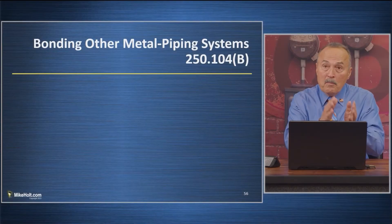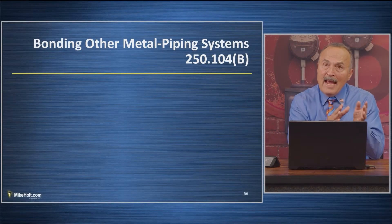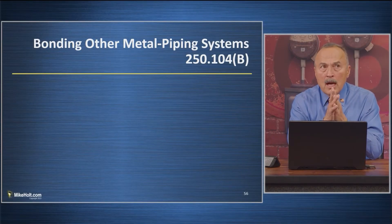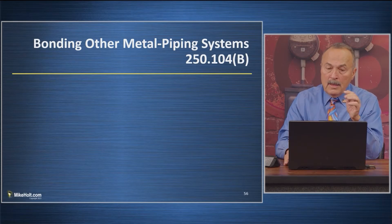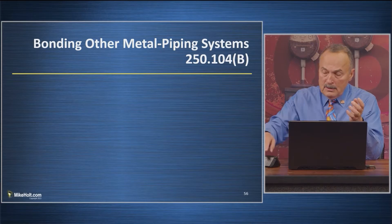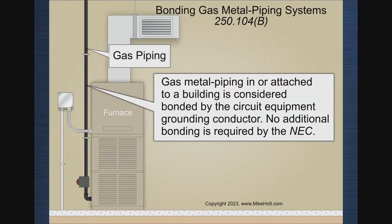Let's go to 250-104-B. Section A had to do with water piping systems as well as sprinkler piping systems. B talks about other metal piping systems — gas piping is an example of 'other' because it's not water piping, so it's other piping systems.